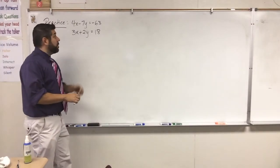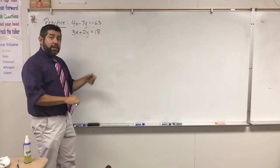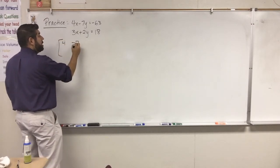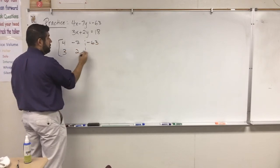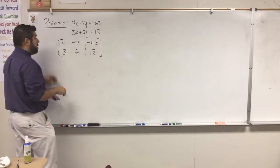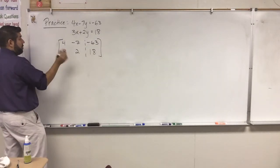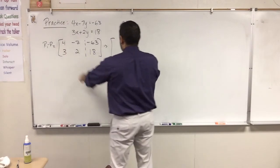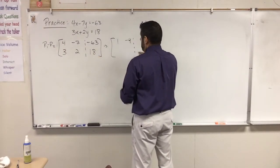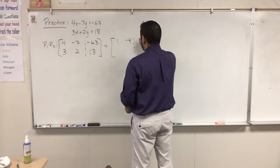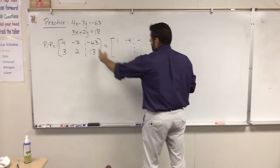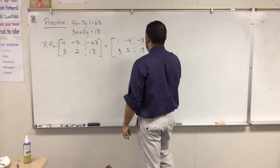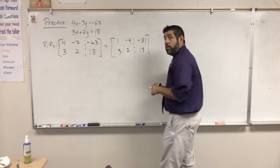Alright, Mr. Maestas is back with your practice problem — I'll crank through this quickly so you can check your answer. You should pause now. The augmented matrix is: 4, negative 7, negative 63 and 3, 2, 18. I recommend doing this without writing out all the row reduction notation once you're comfortable. I'll do R1 minus R2: 4 minus 3 is 1; negative 7 minus 2 is negative 9; negative 63 minus 18 is negative 81. Then row 2 stays: 3, 2, 18.